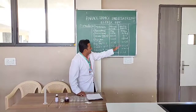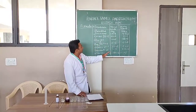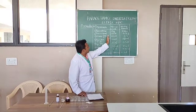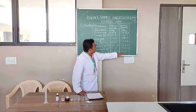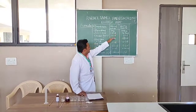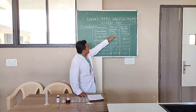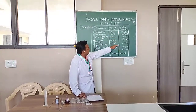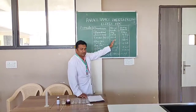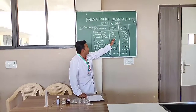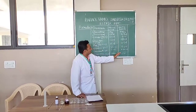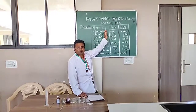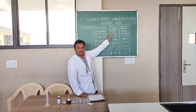We are going to prepare 20 ml of this formulation. This is the official formula for 1000 ml. So the quantity required to prepare 20 ml is calculated by cross multiplication. So we are going to prepare 20 ml of paracetamol pediatric elixir.